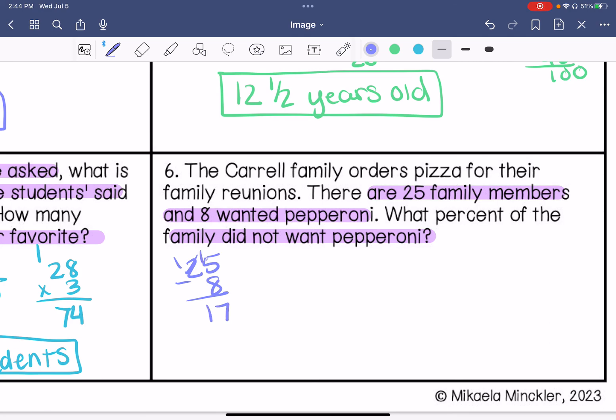So if there's 25 and 8 wanted pepperoni, we know that 17 did not want pepperoni. So my part is 17. My whole is 25. And then we don't know the percentage. So this is times 4. So 17 times 4. So 68% did not want pepperoni.